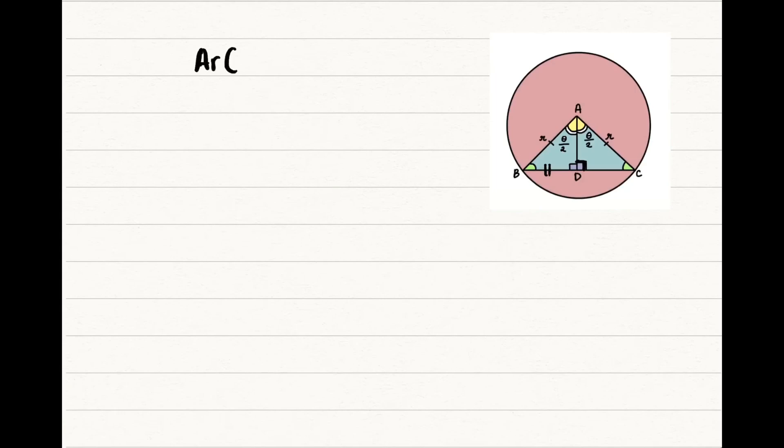Today, we are going to prove that area of a triangle is equal to half r square sine theta in case of a circle.